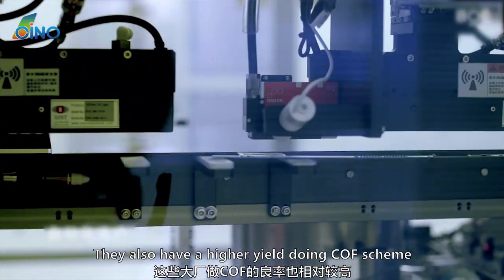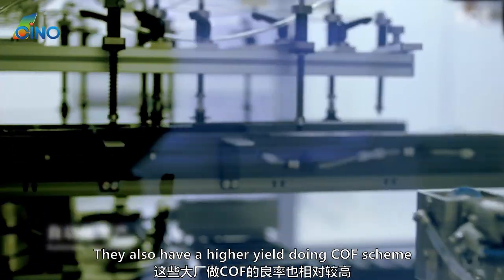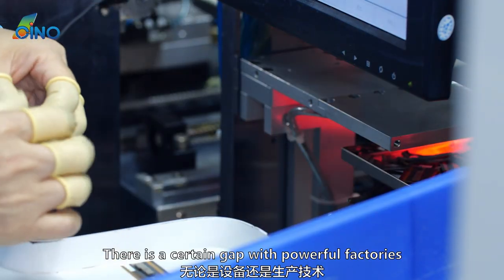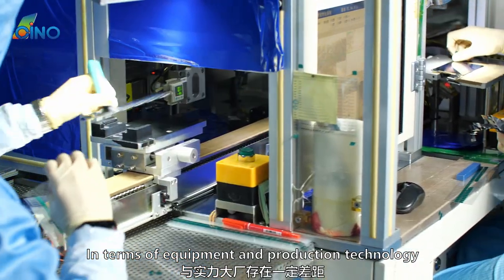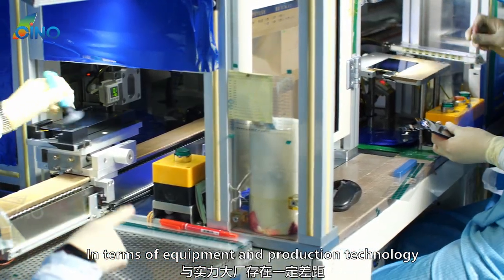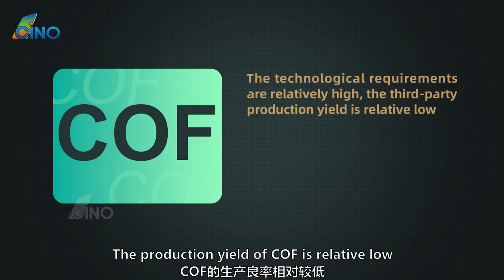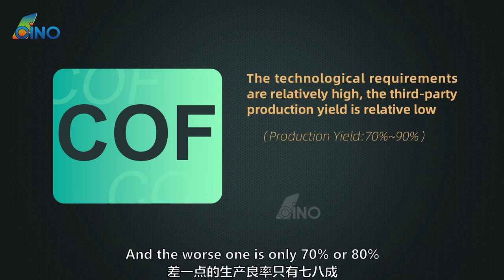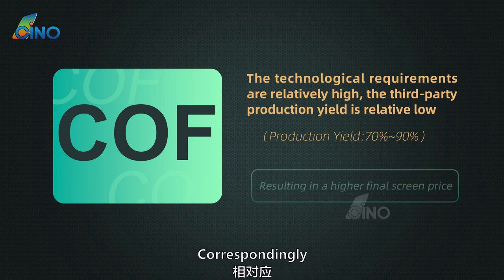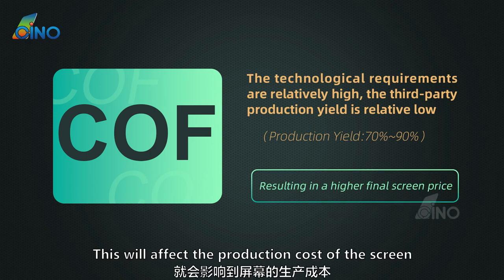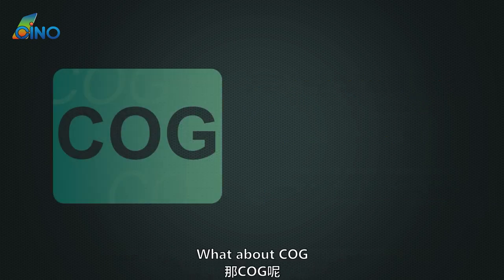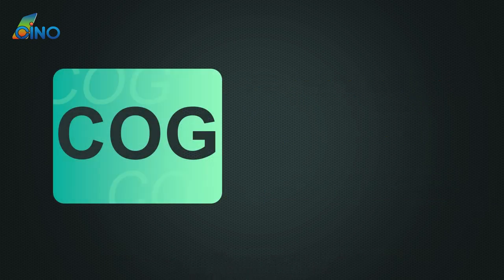For powerful companies such as BOE, BYD, and Foxconn, COF technology is a mature technique and they have a higher yield. But for upstream aftermarket suppliers, there is a certain gap in equipment and production technology. Therefore, the production yield of COF is relatively low — the better ones may reach 90%, and the worst are only 70–80%. This affects production cost, resulting in a higher final screen price.